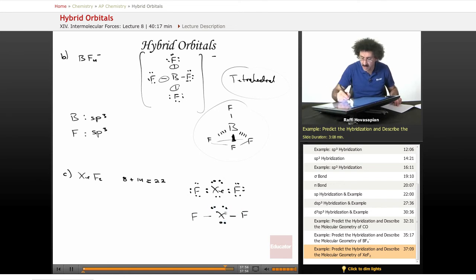We have 5 objects around xenon. 5 objects is dsp3: 3 p's, 1 s, 1 d gives me that kind of hybridization.